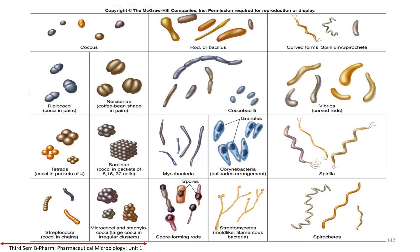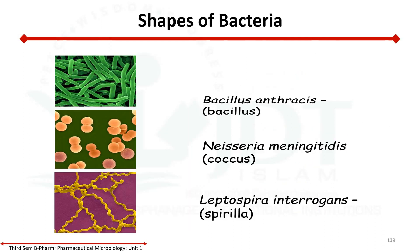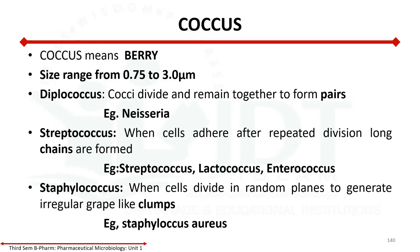Classification also includes bacillus, coccobacillus, vibrio, spirillum, and spirochetes in different shapes. For examples: bacillus shape is Bacillus anthracis; coccus shape is Neisseria meningitidis; and spirillum is Leptospira interrogans.